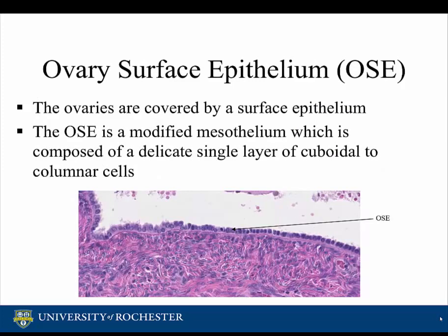The ovaries are covered by a surface epithelium referred to as ovary surface epithelium, or OSE. The OSE is a modified mesothelium which is composed of a delicate single layer of cuboidal to columnar cells.